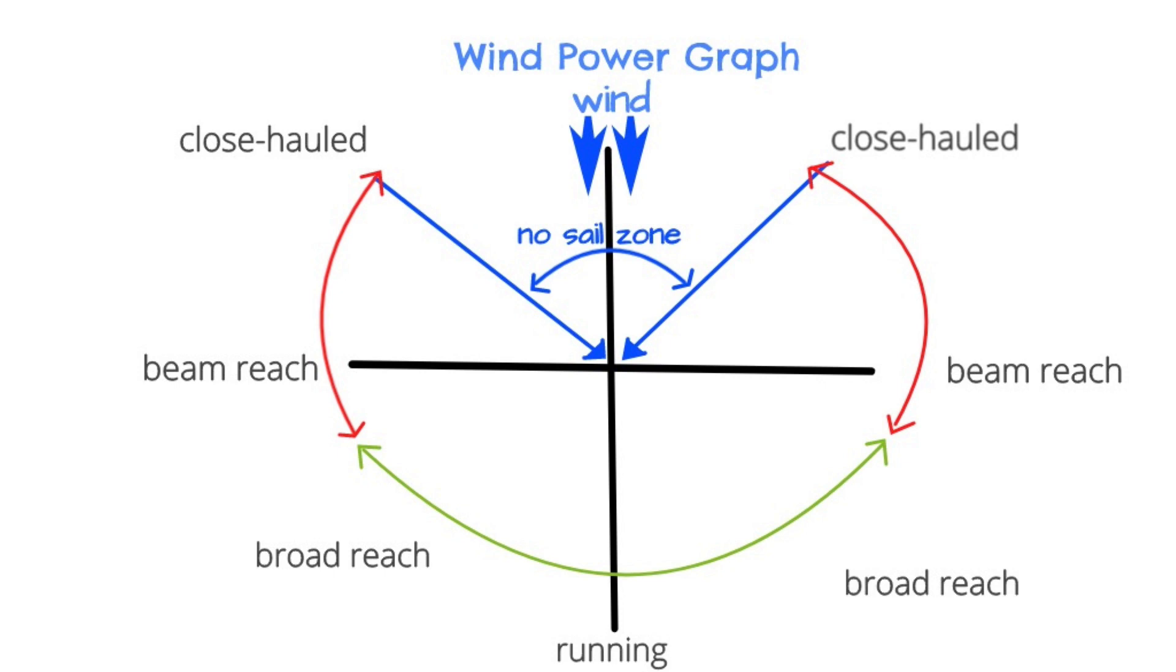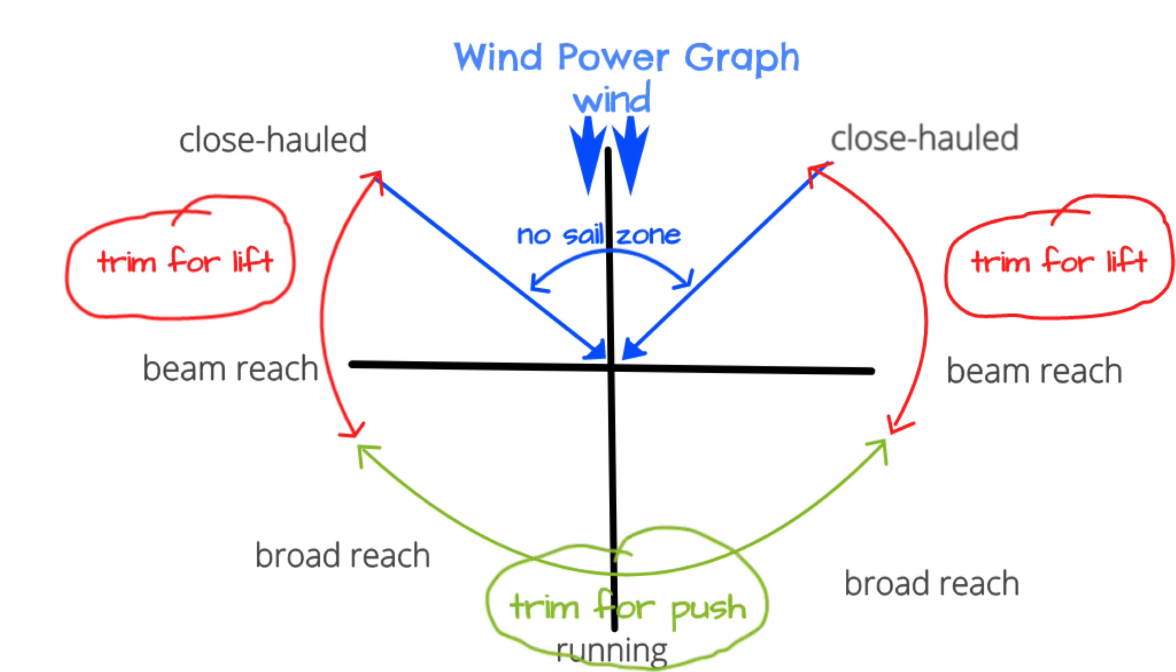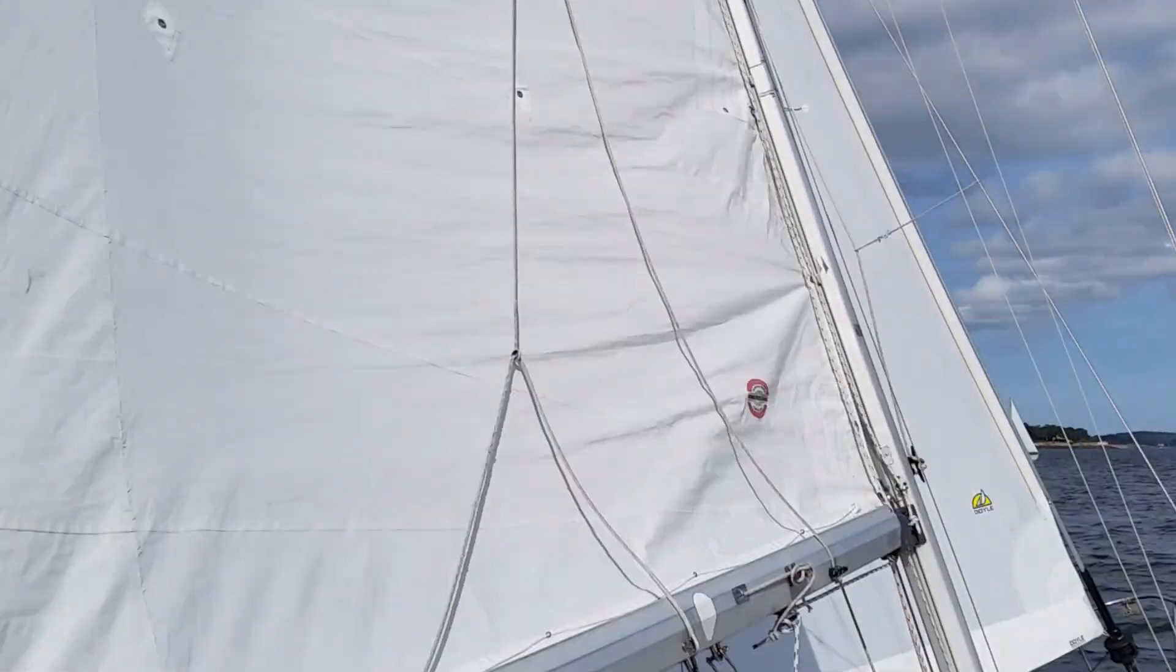If the wind angle is close hauled to just after a beam reach, you want to trim for lift. If it's after a beam reach to running, you want to trim for push. And that's the basics of how to harness wind power.